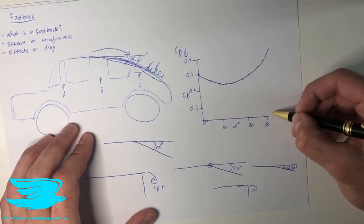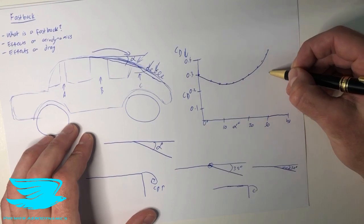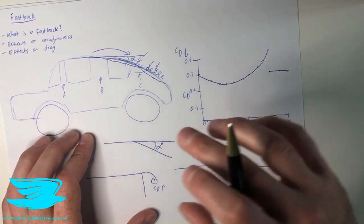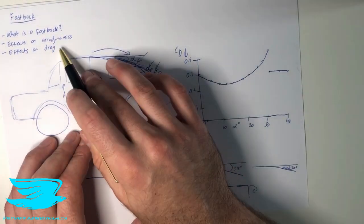If we push it above 30 degrees, and we go to 40 degrees now, the drag will drop all of a sudden, and then just start to stay constant. So that's how the fastback affects aerodynamics with vortices, and how it affects the drag coefficient.